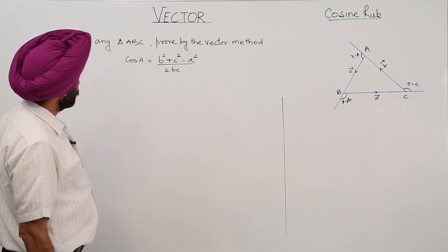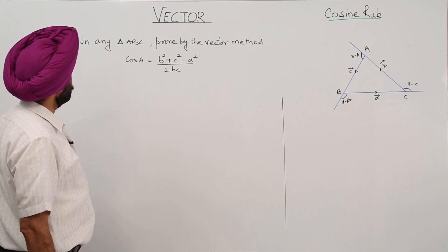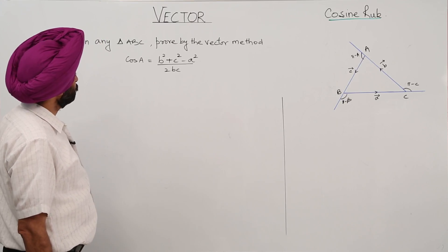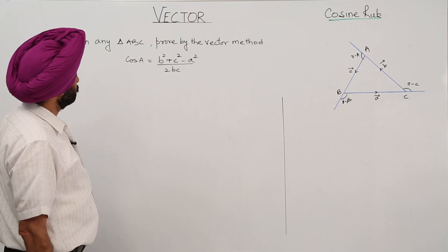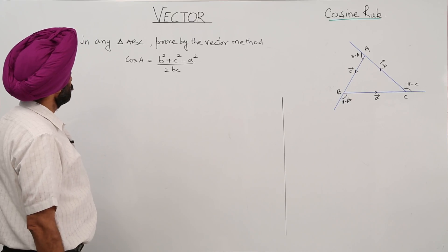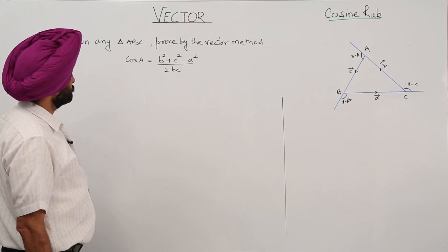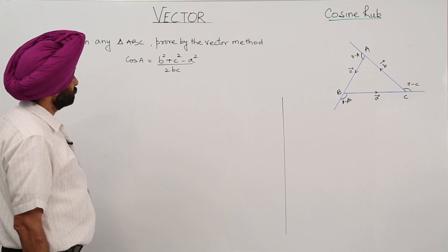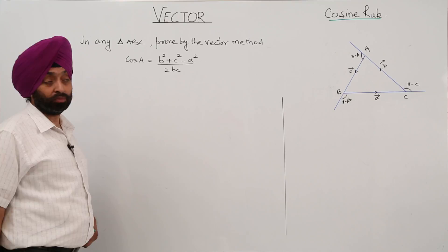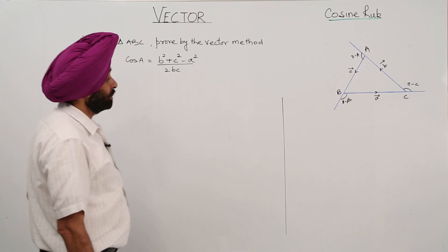Now cosine rule in any triangle ABC proved by the vector method. Cos A is equal to b square plus c square minus a square upon 2bc.